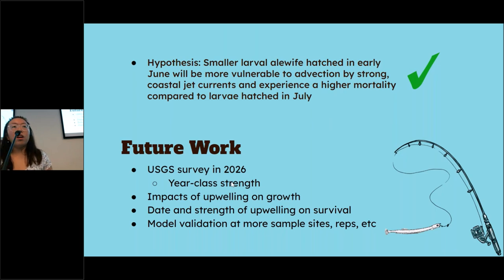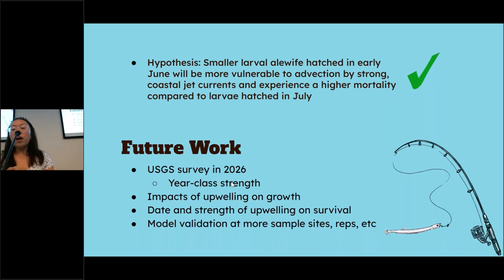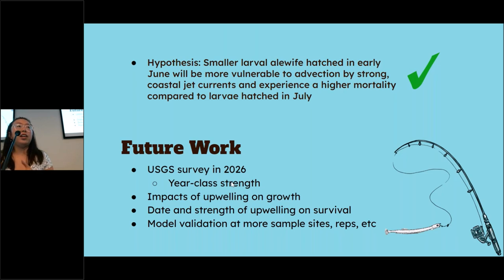Upwellings are more common in the summer months, so they can occur in June and July when there is that stratification of water. I think that larvae hatched mid-June — it depends on the temperature of the lake. If it's a warmer spring, alewife will hatch earlier; if it's a colder spring, they'll hatch later. So it's very temperature-dependent.